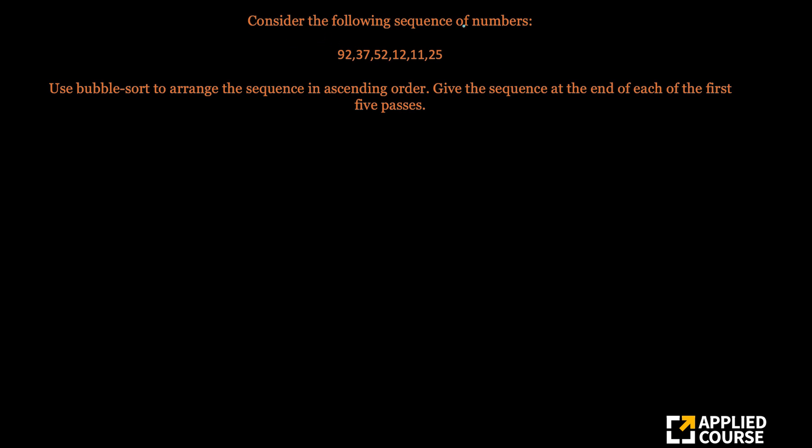Here the question is, consider the following sequence of numbers. You have six numbers here and use bubble sort to arrange the sequence in ascending order. Give the sequence at the end of each of the first five passes.